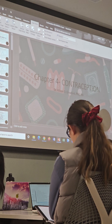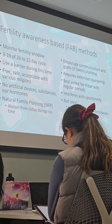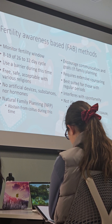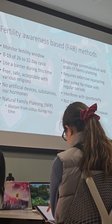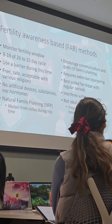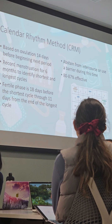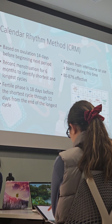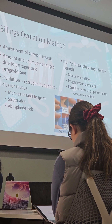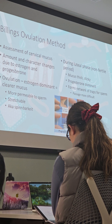The other part of chapter four is contraception. Definitely know with each type who would not be ideal or what would be contraindicated. For instance, fertility awareness would not be recommended for somebody with irregular cycles, perimenopause, or breastfeeding. Know the basics of when somebody is normally ovulating, when the most fertile time is, and the signs and symptoms of ovulation — like mucus changes.